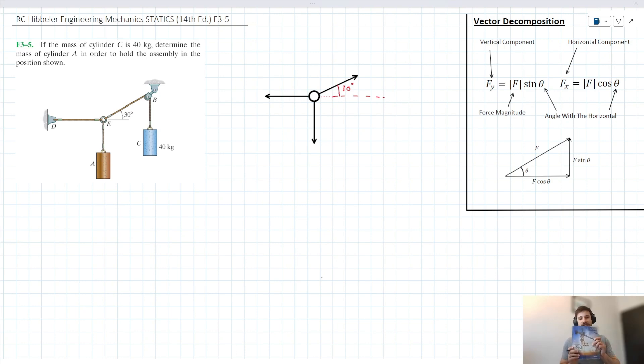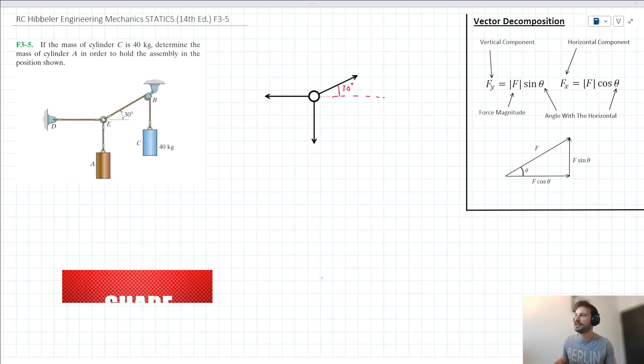Hello and welcome to this video tutorial for R.C. Hibbeler's Engineering Mechanics Statics textbook. We have this problem from chapter 3, which asks: if the mass of cylinder C is 40 kilograms, determine the mass of cylinder A in order to hold the assembly in the position shown.